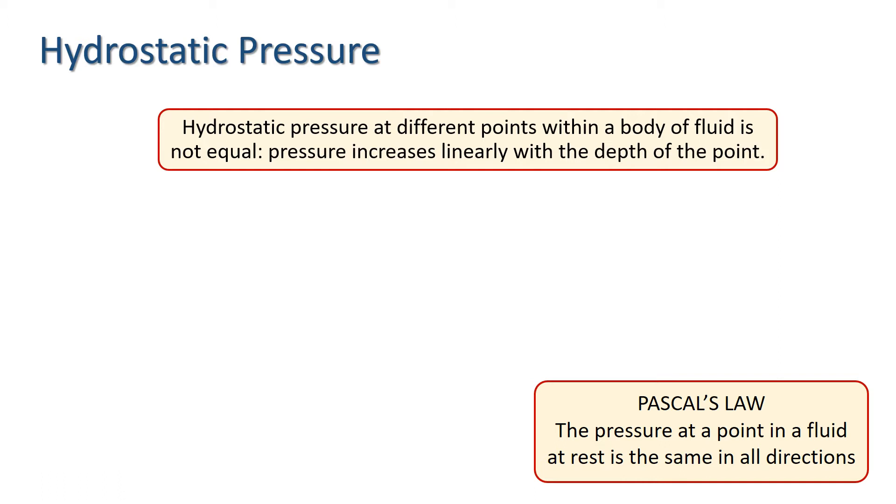Before we prove that result, we need another definition. Density is defined as mass per unit volume. We usually use the Greek letter rho to denote density. Water has a density of approximately 1000 kilograms per meter cubed, and we often state the density of other fluids as a relative density.